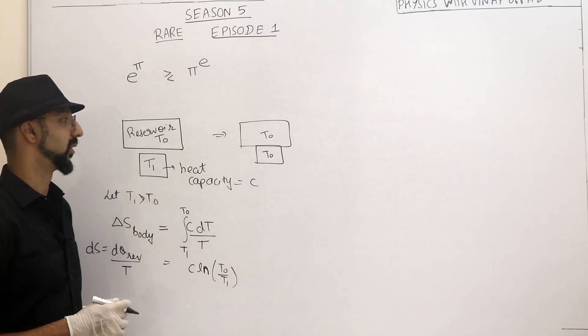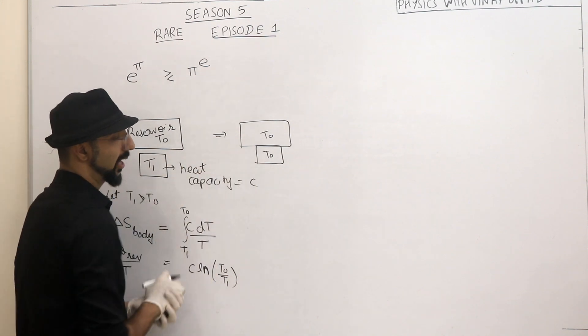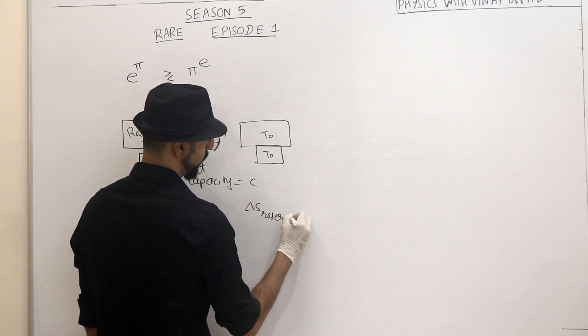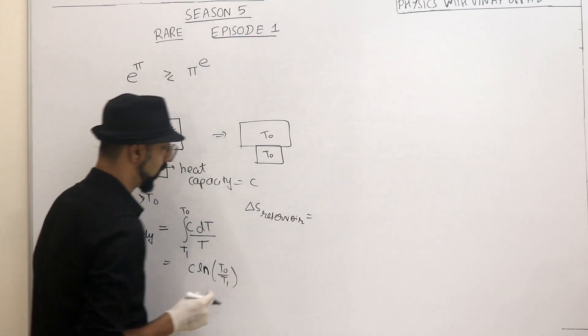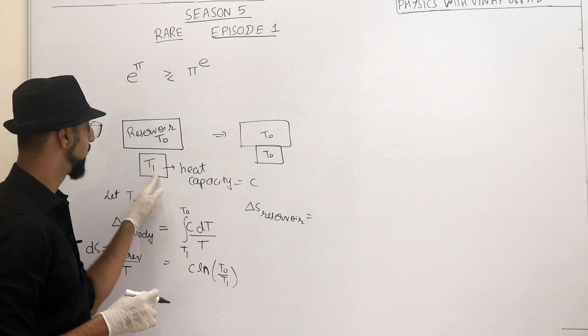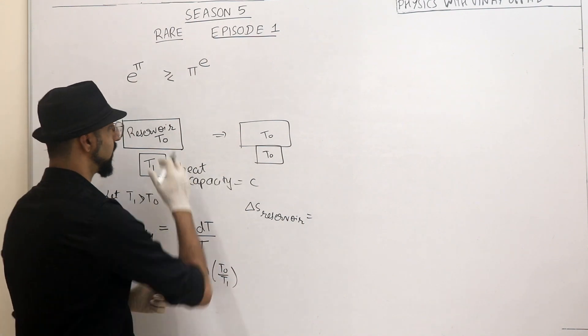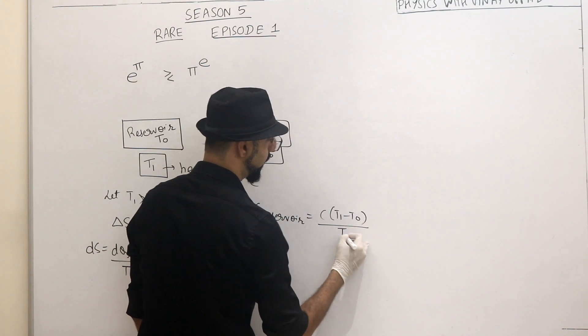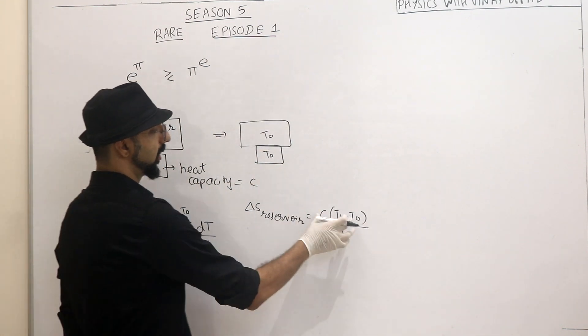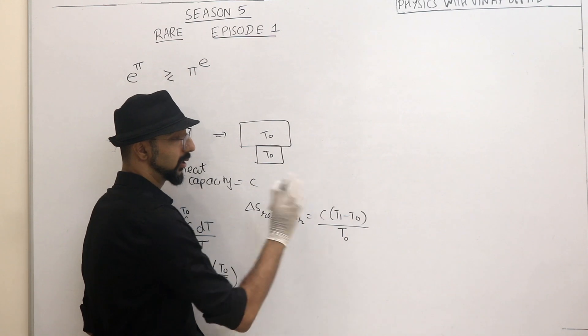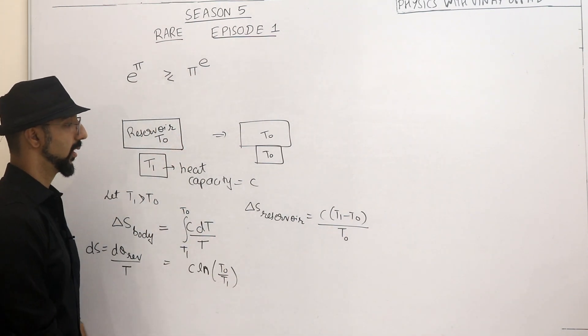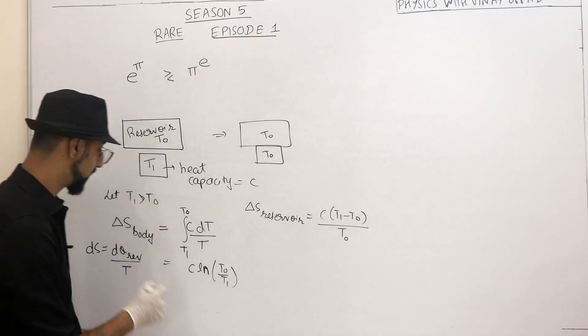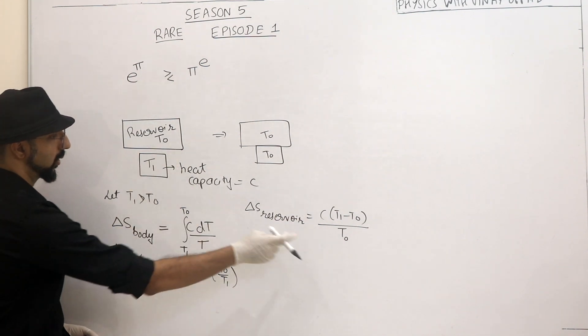What about the change in entropy of the reservoir? Now, when this body goes from temperature T1 to T0, how much heat has it lost? It has lost a heat of how much? Heat capacity into T1 minus T0. So it has lost the heat to the reservoir. This is the heat absorbed by the reservoir at what temperature? T0. That is what appears in the denominator. Because this T0 was a constant, so we didn't have to do any integration. We could have just said delta S is equal to total heat absorbed by the reservoir divided by T0.